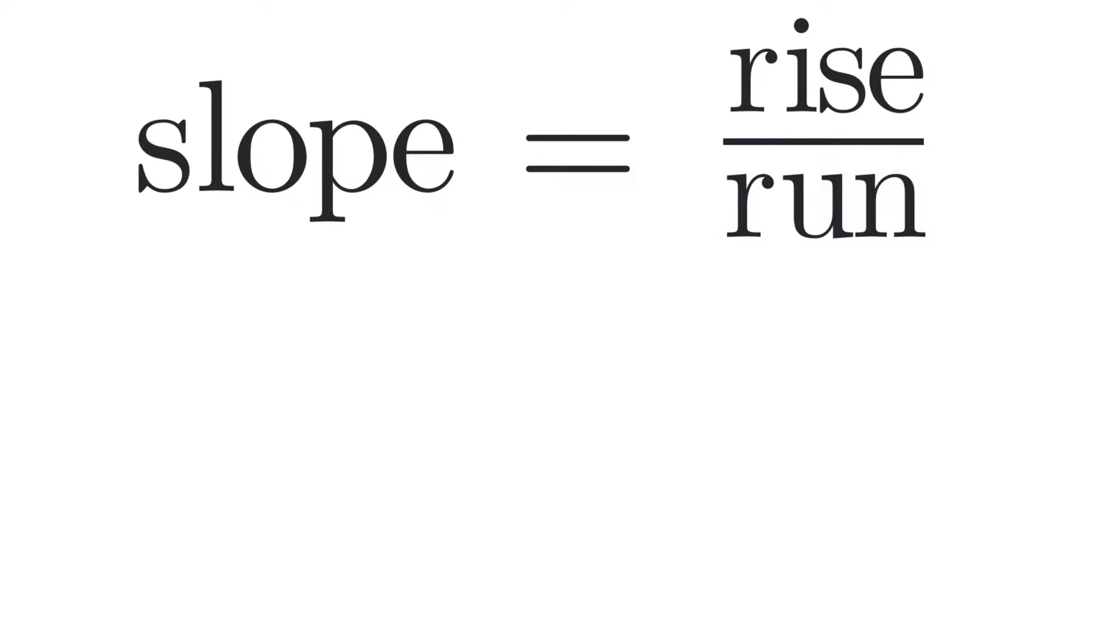We can use the equation of one line to determine the equation of a perpendicular line. We do this by representing the perpendicular slope as m⊥, which is the negative reciprocal or -1 divided by m.